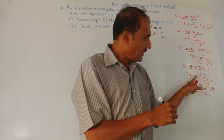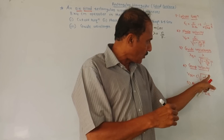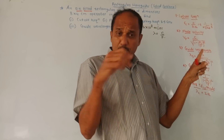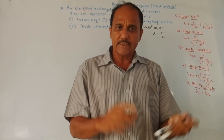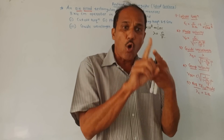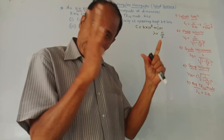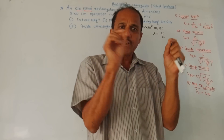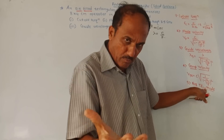Then group velocity. The notation is vgr, which equals c — the speed of light — times square root of 1 upon (1 minus (fc by f) squared). One important part: if it is mentioned in the question that the operating mode is TE10 mode, then it is also called a dominant mode, because in case of rectangular waveguide for transverse electric mode, TE10 is the dominant mode.